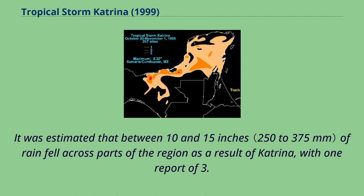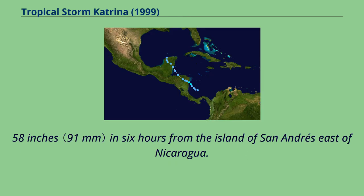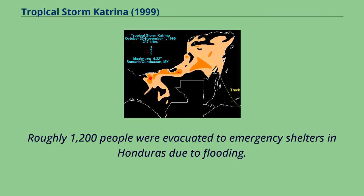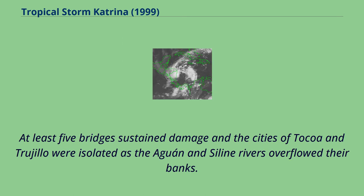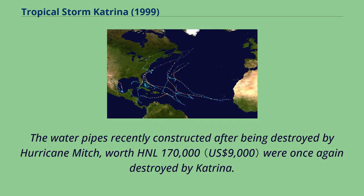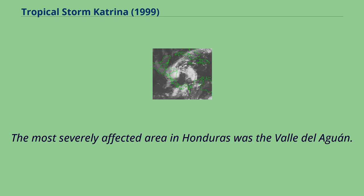It was estimated that between 10 and 15 inches of rain fell across parts of the region as a result of Katrina, with one report of 3.58 inches in six hours from the island of San Andres east of Nicaragua. Roughly 1,200 people were evacuated to emergency shelters in Honduras due to flooding. At least five bridges sustained damage and the cities of Toco and Trujillo were isolated as the Aguan and Salini rivers overflowed their banks. The water pipes recently constructed after being destroyed by Hurricane Mitch, worth HNL 170,000, were once again destroyed by Katrina. The most severely affected area in Honduras was the Valle del Aguan.